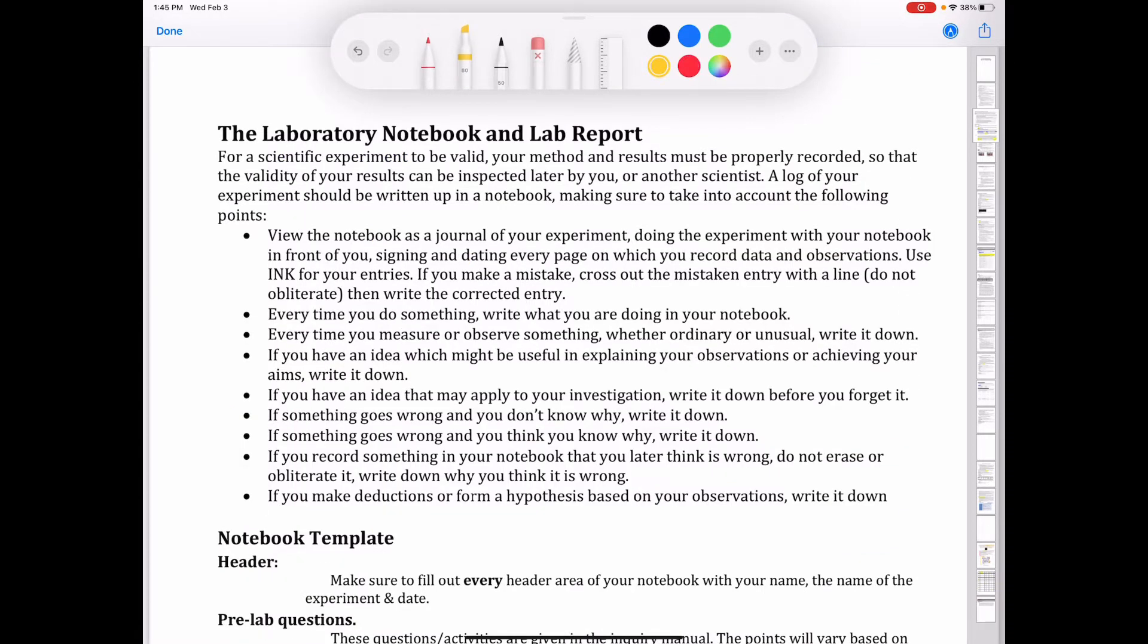Let's talk a little bit more about the lab notebook and what your lab reports will look like. It says here that for a scientific experiment to be valid, your method and results must be properly recorded so that the validity of your results can be inspected later by you or another scientist. So what this means is that your lab book has to be neat enough so that either you at a later date or another scientist would be able to pick up your lab book and be able to interpret the information that's in there.